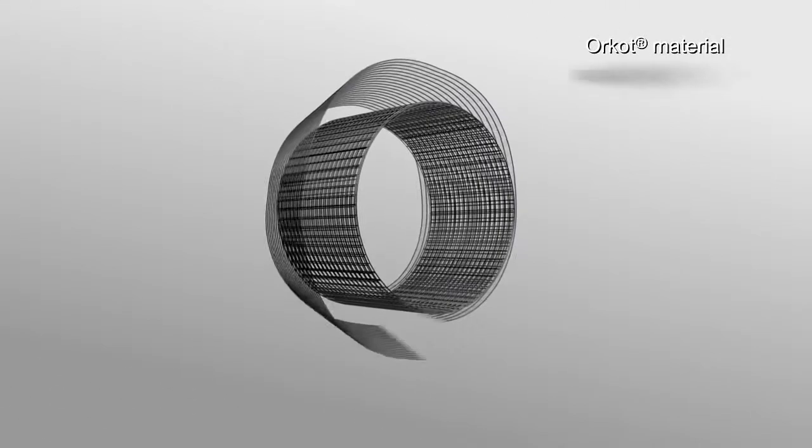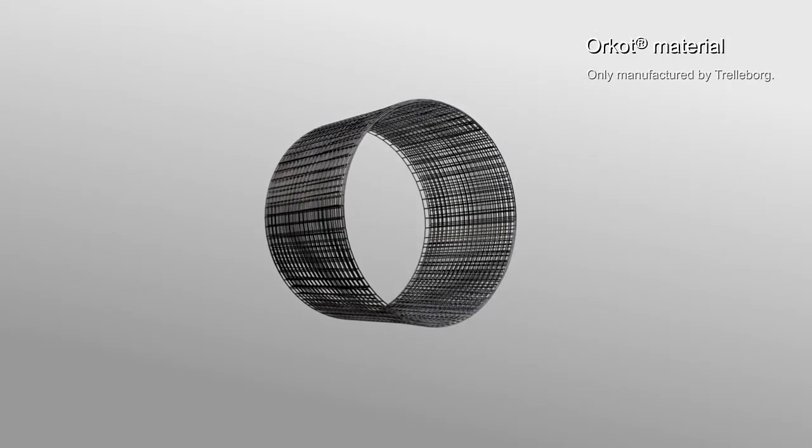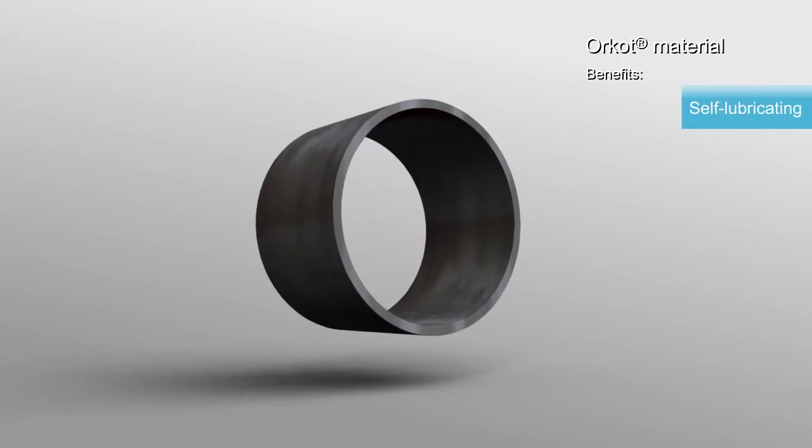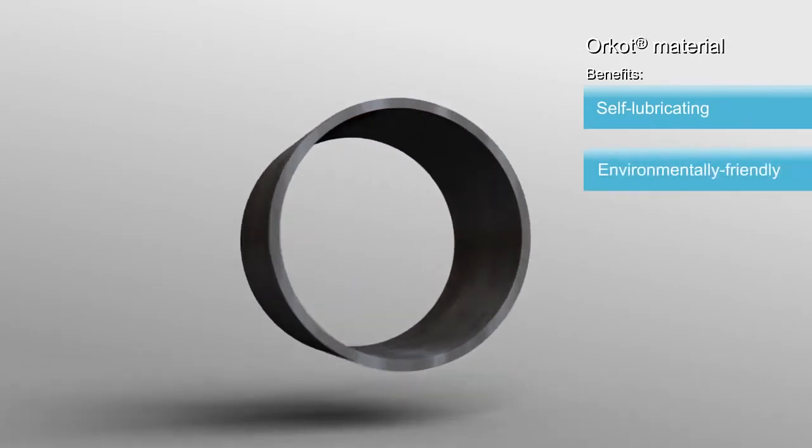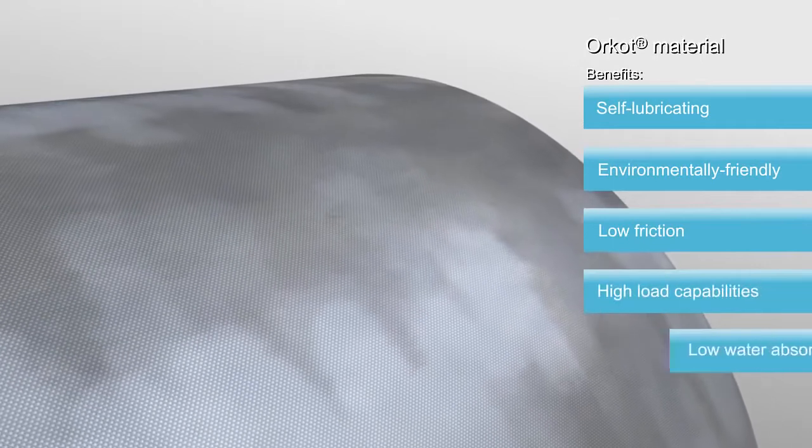Orcott is a premium bearing material proprietary to Trelleborg, made of special fabrics with a complex blend of fillers. It is self-lubricating, environmentally friendly and ensures low friction, high load capabilities and low water absorption.